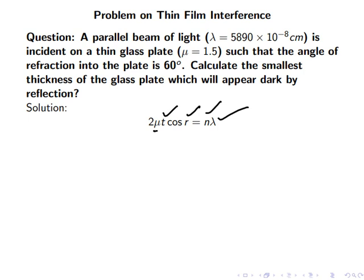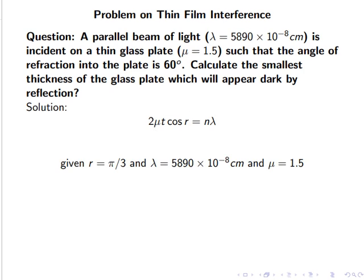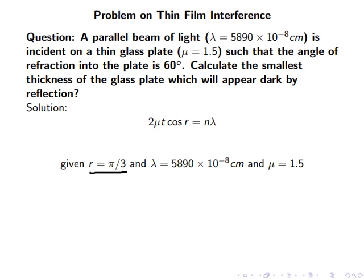These values are given. Let's look at these values. We have r, which is the angle of refraction, which is 60°. We have wavelength, which is known, that is 5890 × 10⁻⁸ cm, and the refractive index, which is 1.5.